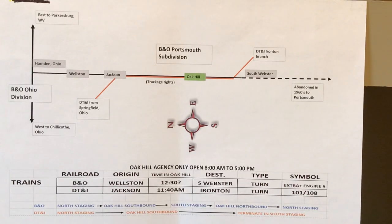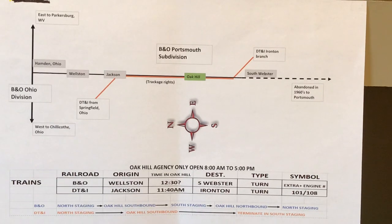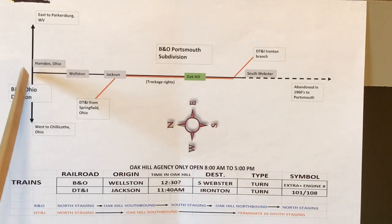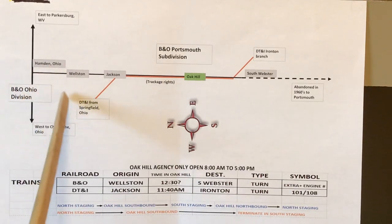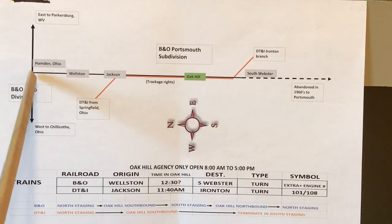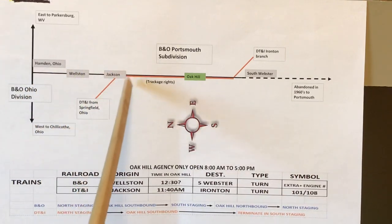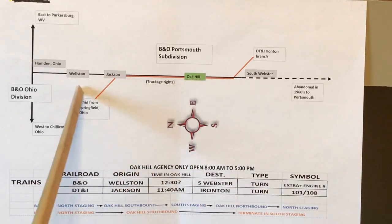Over the years, the operating patterns changed based on how much traffic there was on the line. Typically a crew was called out of Wellston — there was a yard just south of Wellston called Meadow Run, but the crews were based out of Wellston. If there wasn't a lot of traffic at the time, through trains would drop off cars in Hampton, Ohio. The Wellston or Portsmouth job would go to Hampton in the morning, drop off the previous day's cars, pick up the cars they needed, then head south switching the industries as they went, and come back to Wellston at the end of the day.